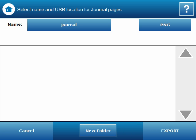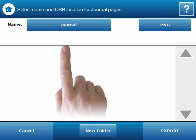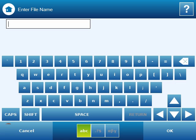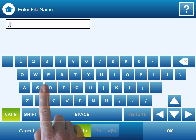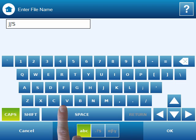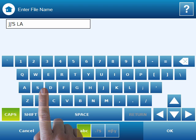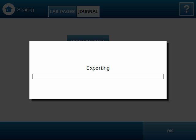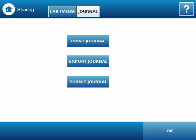In this screen, students have the option to give their journal a unique name to differentiate it when turning in files. Once the export is complete, simply remove the flash drive and plug it into a computer.